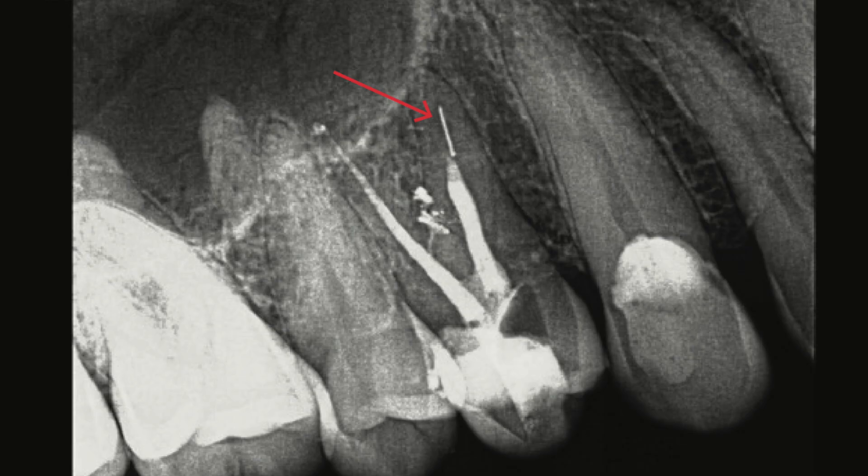Another great reason to do an apico is if you have an obstruction like a separated file or some calcification that prevented you from getting to length. The apico would resect three millimeters of the root, most likely exposing the file, and then your retro prep would likely remove the file and clean the area, allowing you to seal the canal properly from the end.